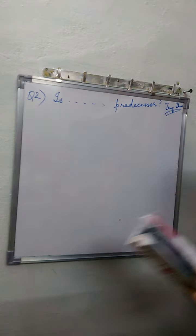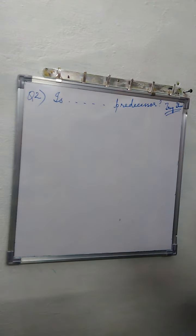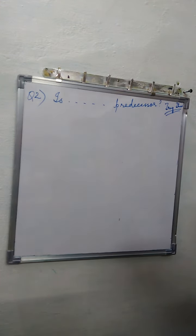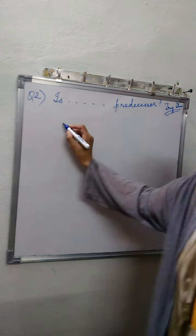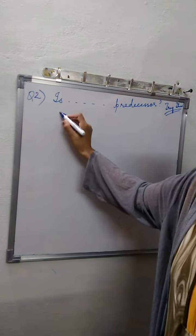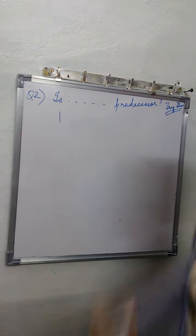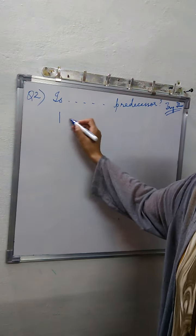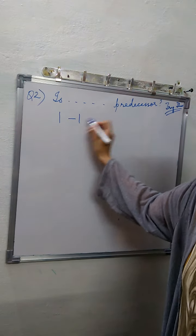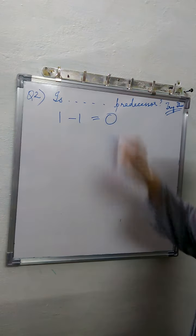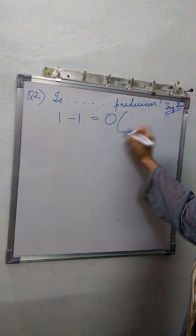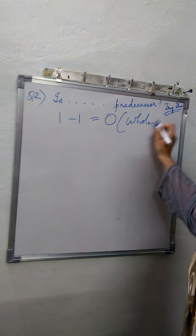The question says: is there any natural number that has no predecessor? The smallest natural number is 1. Now if you find a predecessor of 1, what will you get? 0.